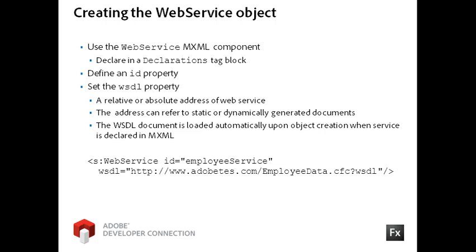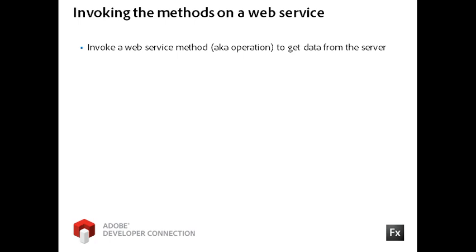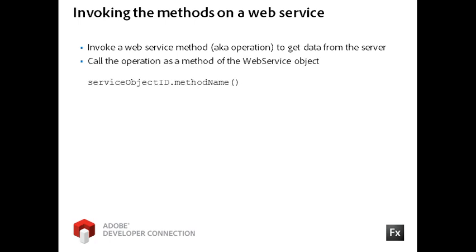Note that, unlike the HTTP service object definition, which directly accessed the data, this Web Service instance only accesses the WSDL document, not the methods on the server that directly provide the data. For a Web Service object, you must invoke the Web Service method, also called an operation, in a separate statement. You call the operation as a method of the Web Service object using dot notation.